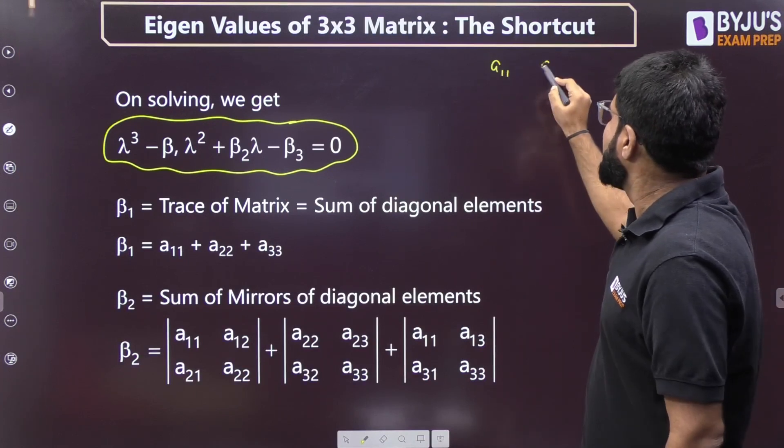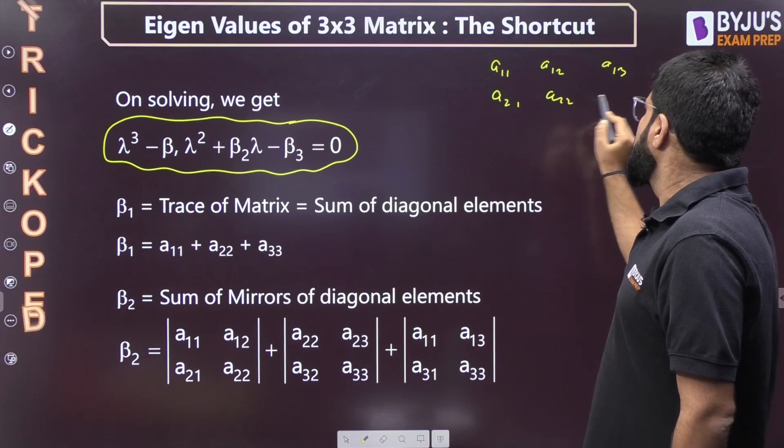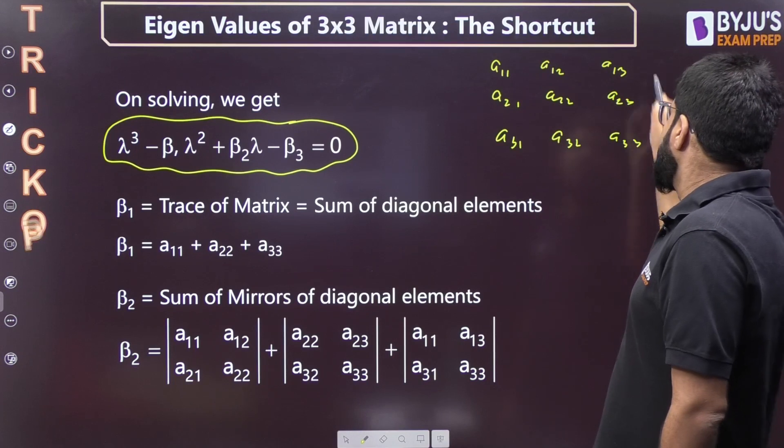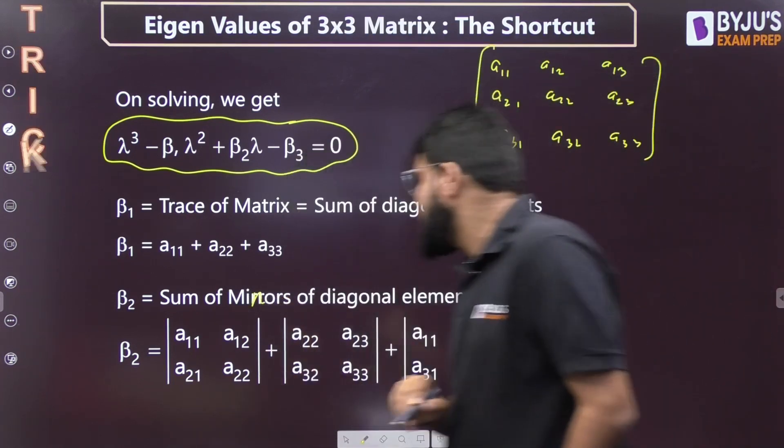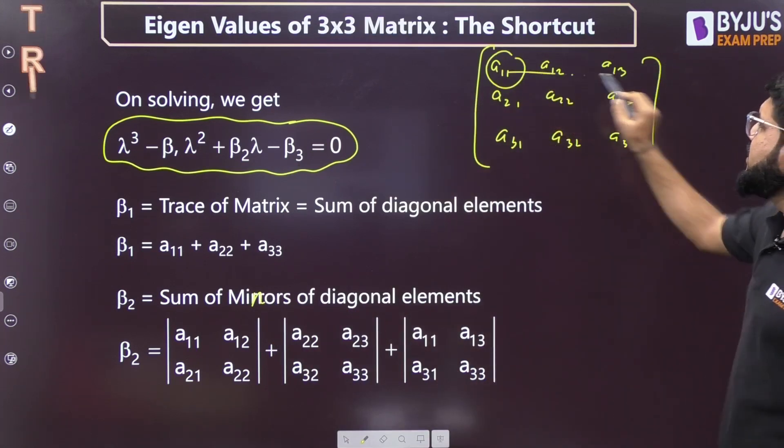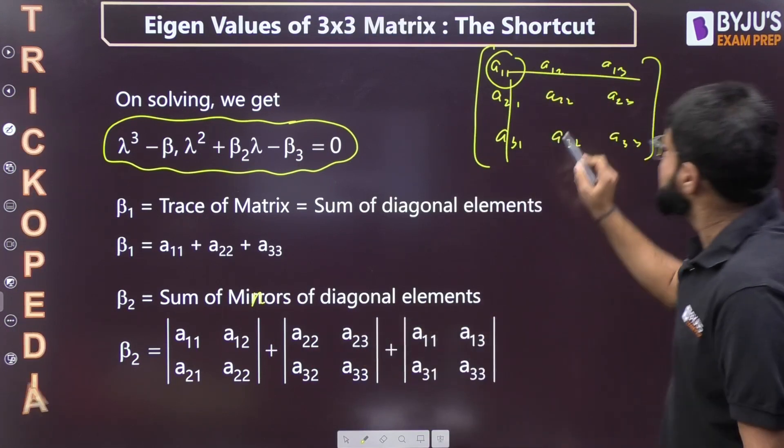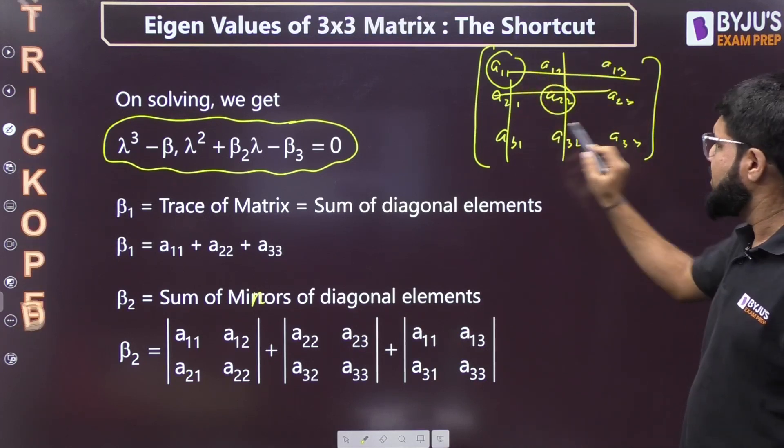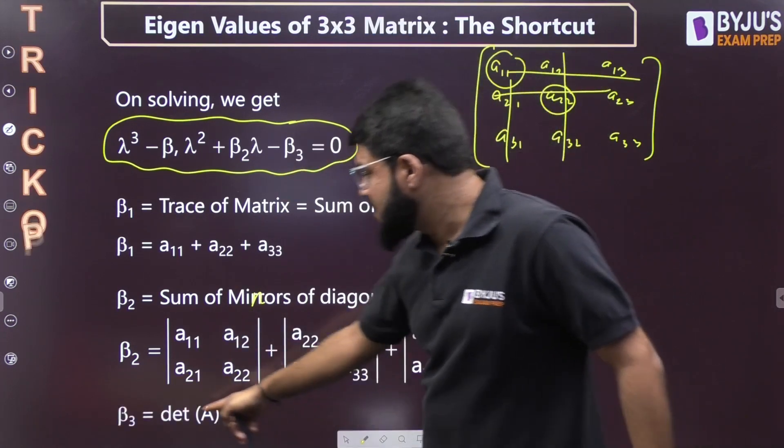β₁ = a₁₁ + a₂₂ + a₃₃. β₂ is the sum of the minors of the diagonal elements. The original matrix is a₁₁, a₁₂, a₁₃; a₂₁, a₂₂, a₂₃; a₃₁, a₃₂, a₃₃. β₂ is the sum of minors of diagonal elements. If this is a diagonal element, delete the row and column, you get the 2x2 minor. β₃ is the determinant of the matrix.